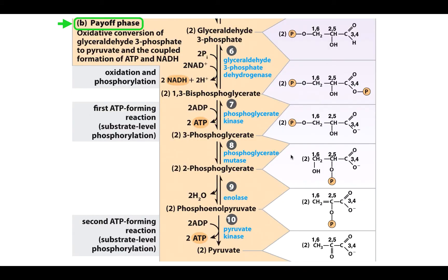Here is reactions six through ten. This is together called the payoff phase because here we finally make enough ATP where we're netting ATP. Remember, in the preparatory phase we spent two ATP. In the payoff phase, we are producing four ATP. So four minus two is our net two ATP.